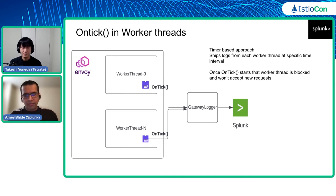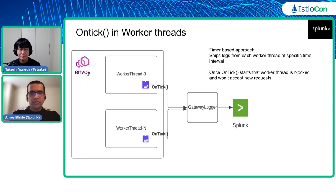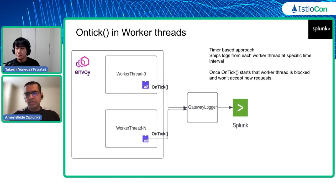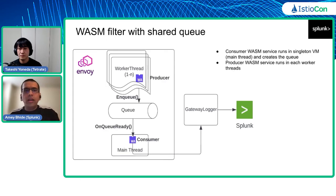What we observed was that once OnTick starts execution, that particular worker thread gets blocked and won't accept new HTTP requests. This will cause problems at higher RPS or under resource constraints. Another issue is that the number of log shippers is directly equivalent to the number of worker threads. If a higher RPS causes Kubernetes HPA to kick in and we scale out our ingress tier, we'd scale out our log shippers too — which could cause a cascading scale-out of the Gateway Logger service itself.